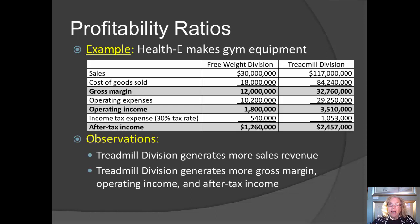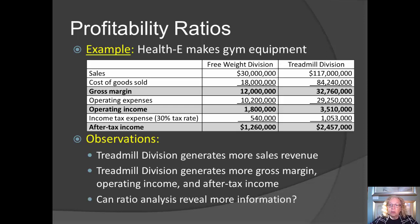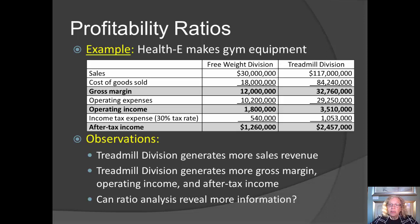But if the divisions are different sizes, this may not be a fair comparison. If the treadmill division is much bigger, of course they're going to generate more sales, more operating income, more after-tax income. So let's look at some ratios to see which division is performing better based on income generated per dollar of sales.